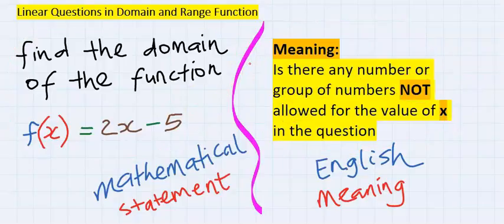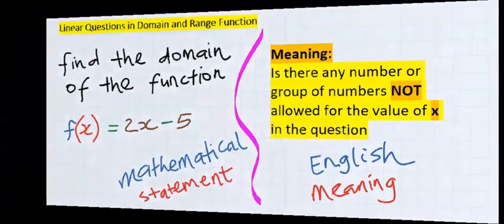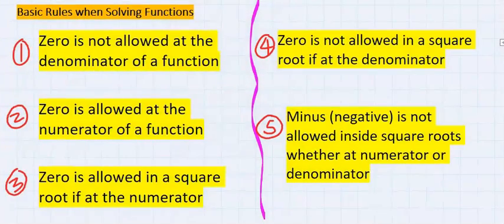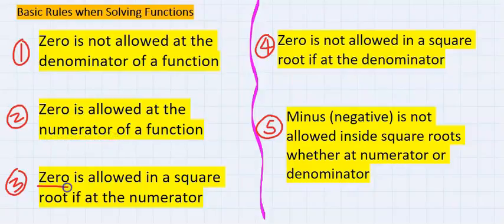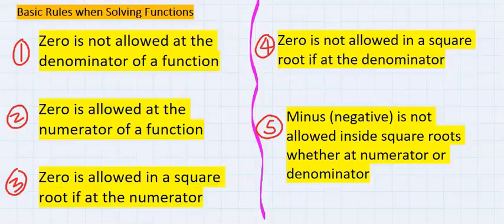This is the first step — to understand the question. Step two: consider the basic rules when solving functions. Rule one: zero is not allowed at the denominator. Rule two: zero is allowed at the numerator. Rule three: zero is allowed inside a square root only if the square root is at the numerator.